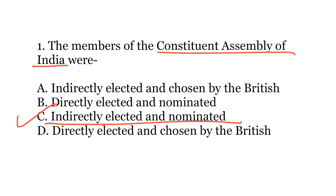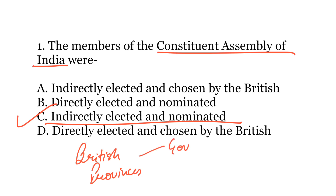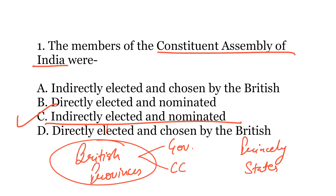There were two types of provinces from which members of the Constituent Assembly were chosen: the British provinces and the princely states. The British provinces were further of two types — governors' provinces and chief commissioners' provinces. The princely states were under the rule of princes and kings. Members from the British provinces were indirectly elected, whereas members from the princely states were nominated. So there was no direct election at all.